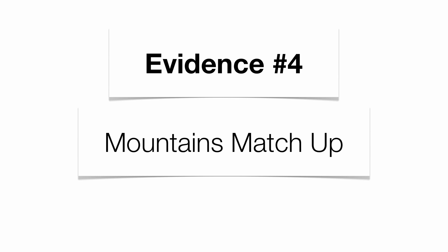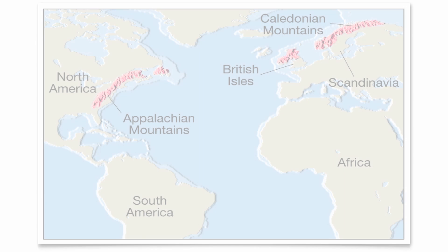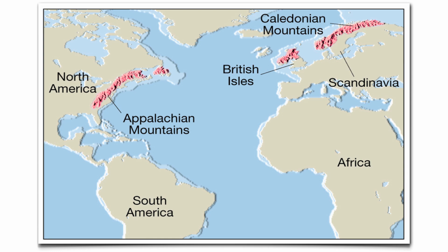Evidence number four is that mountain ranges matched up. Wegener noticed that the Appalachian Mountains along the east coast of North America match up perfectly with the Caledonian Mountains in Scandinavia and the British Isles — not only the same rock type, but also the same age. So at one point, North America and the Eurasian plate must have been together, until Pangaea started to break up and the mountain ranges separated.